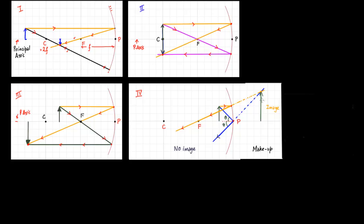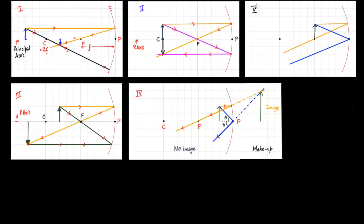The last case, case five, is when the object is placed at the focus. The first ray parallel to the principal axis reflects through the focus. The second ray strikes the pole and reflects at the same angle theta. These two rays — orange and blue — are parallel to each other and do not intersect either in front of or behind the mirror. Therefore, no image is formed.